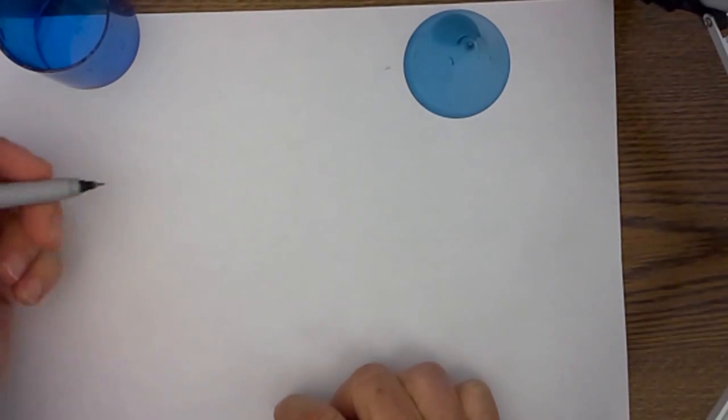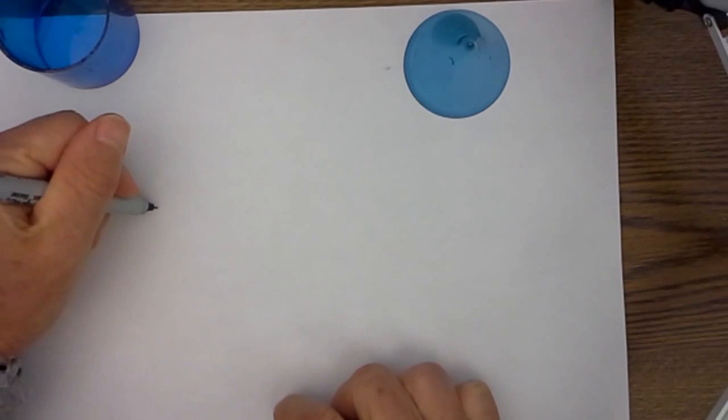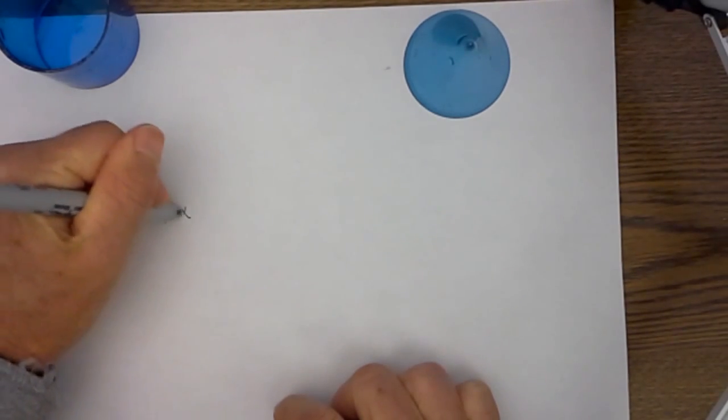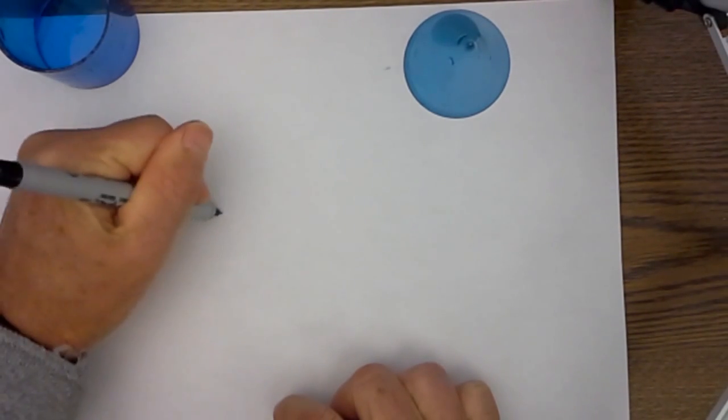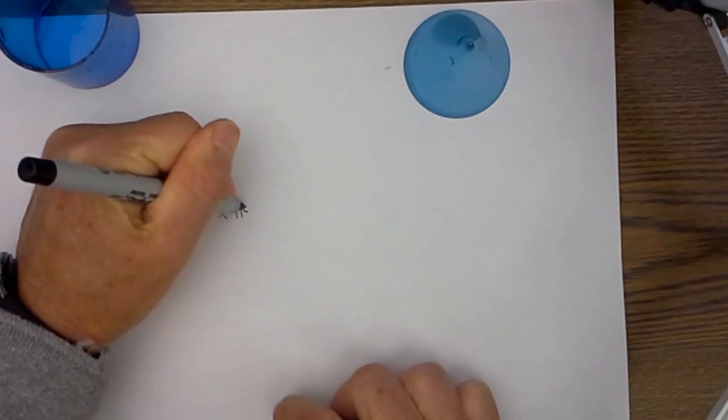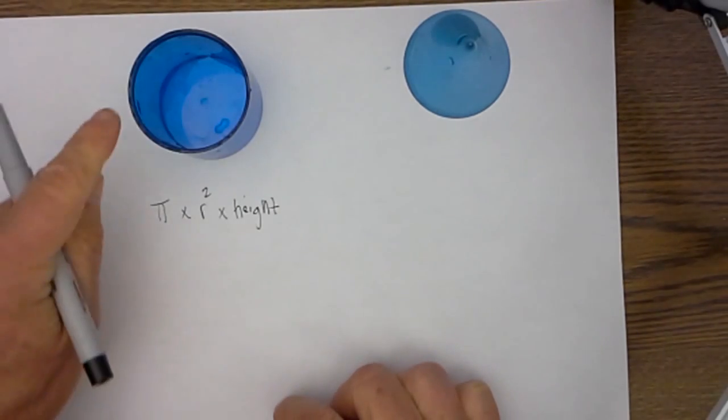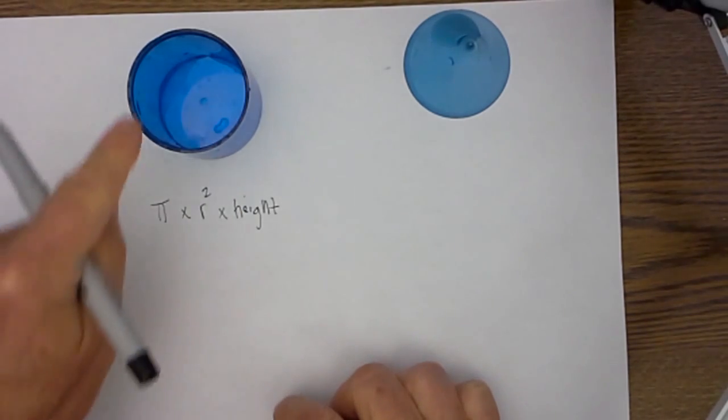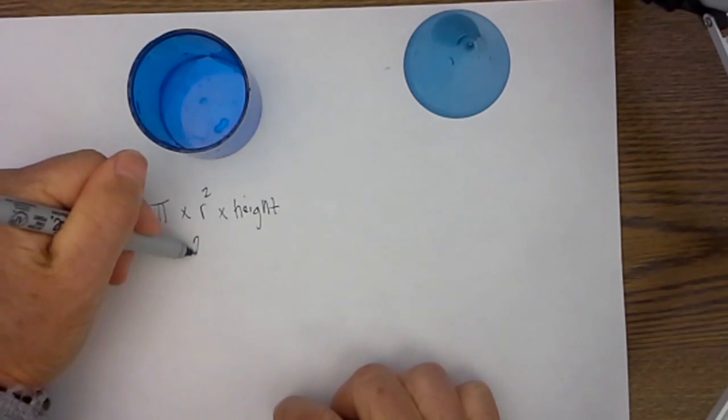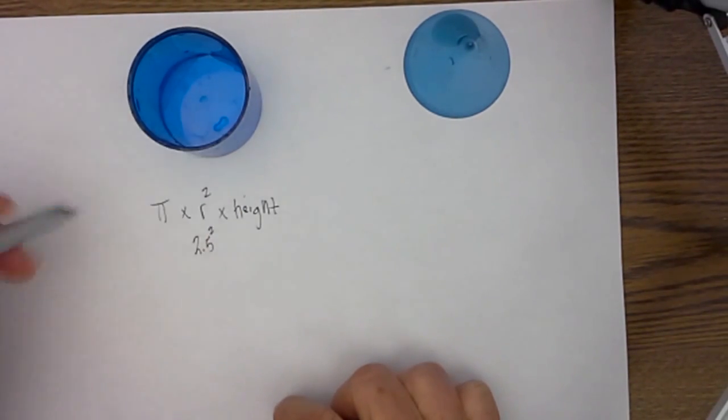The formula for volume of a cylinder is pi times the radius squared times the height. And so what I did was I got a ruler and I measured the diameter and divided it in half for the radius and that gave me 2.5 squared.